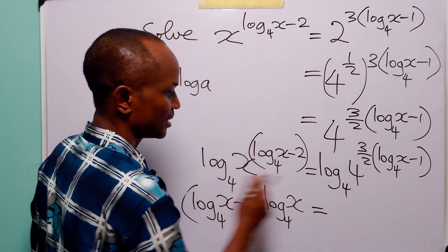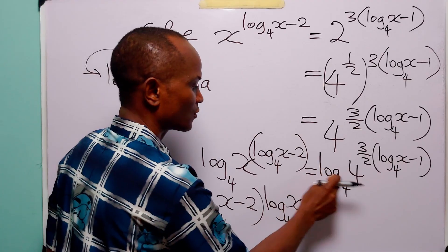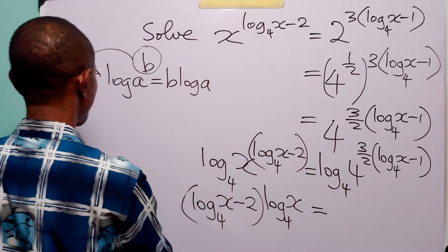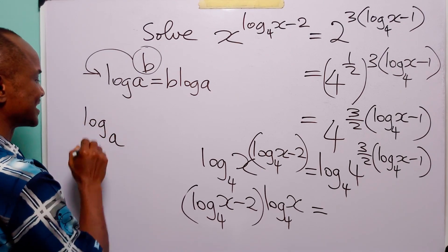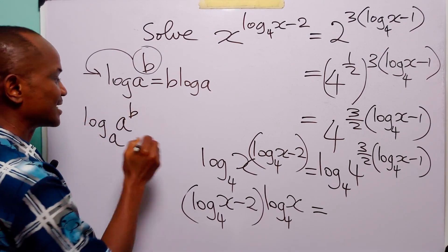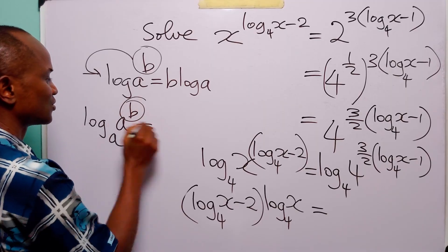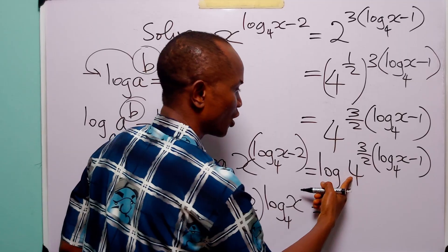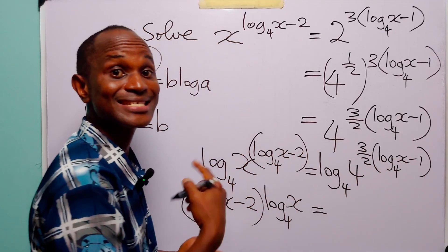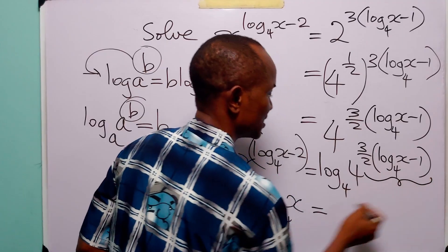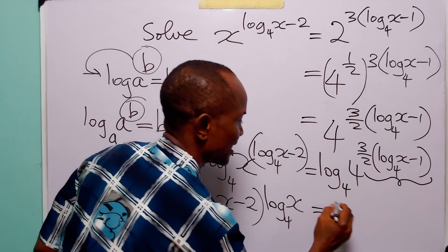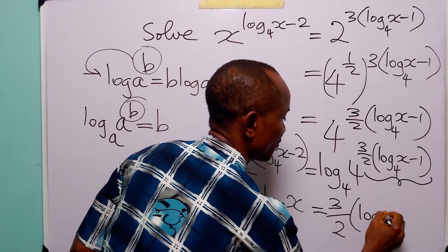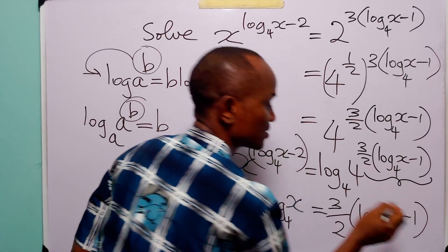Now here, look at this — we have log to base 4 of 4 to this power. Remember that when we have log to base a of a to the power b, this is simply equal to b. So here, log to base 4 of 4 to the power 3 over 2 multiplied by log to base 4 of x minus 1 simplifies, and on the right hand side we have 3 over 2 multiplied by log to base 4 of x minus 1.